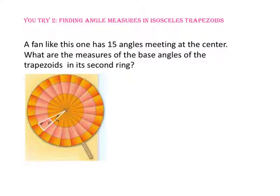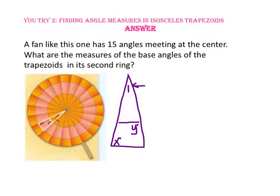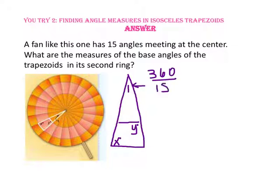Pause the video and do U-try number 2. A fan like this one has 15 angles meeting at the center. What are the measures of the base angles of the trapezoid in the second ring? Let's start by redrawing the triangle and finding the measure of angle 1. Since there are 15 triangles forming a circle, 360 degrees divided by 15 gives us the measure of angle 1, which is 24 degrees.